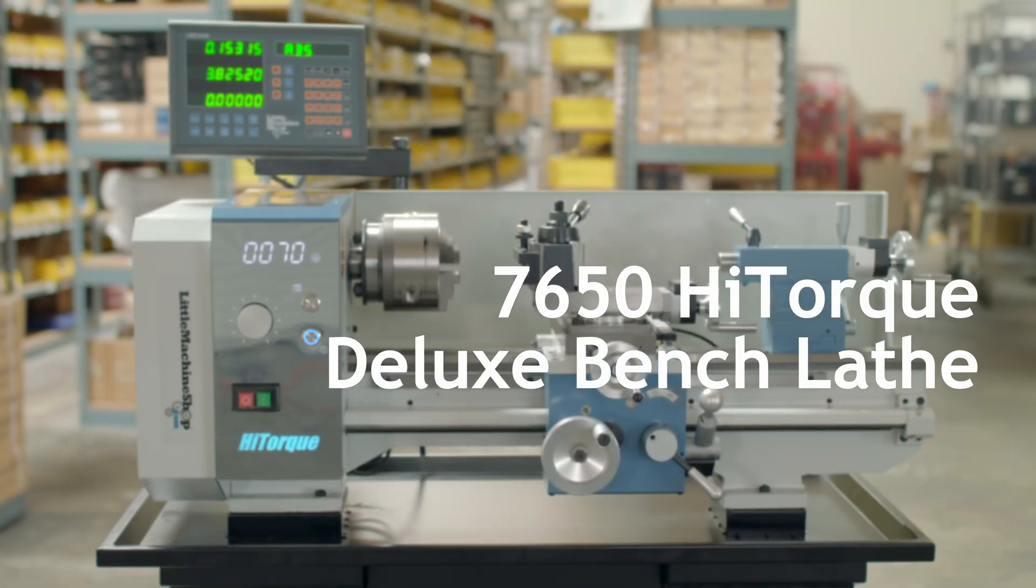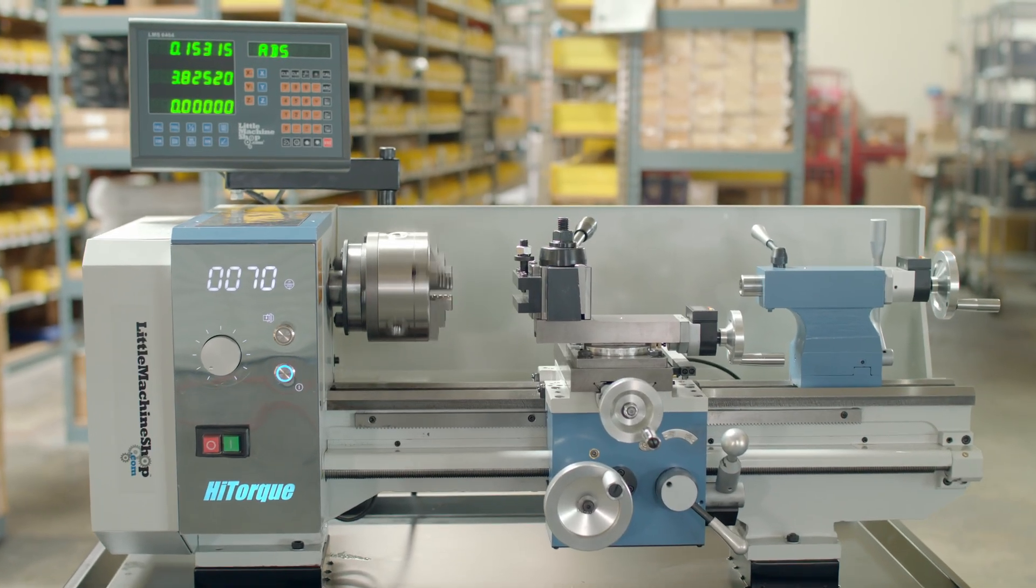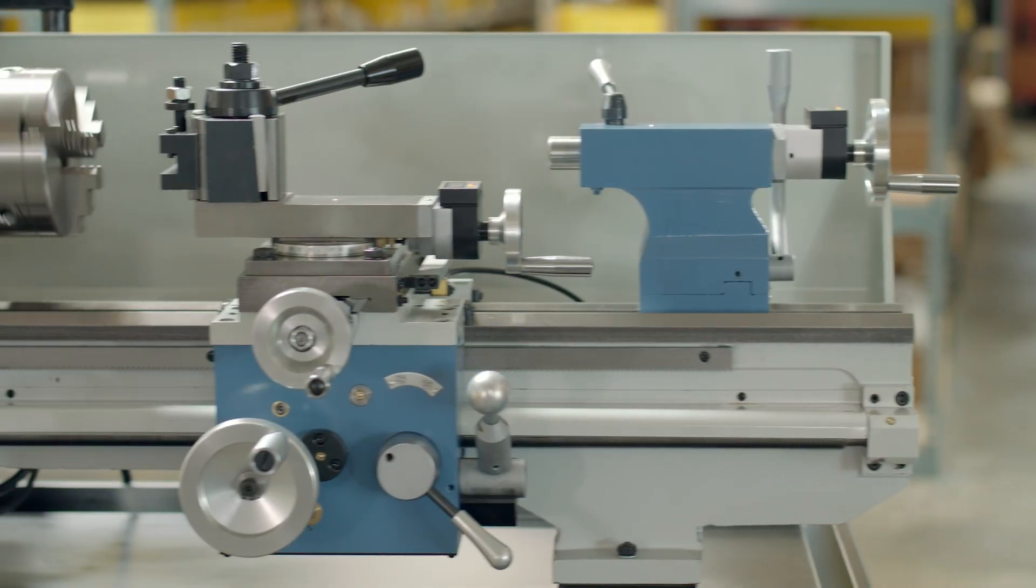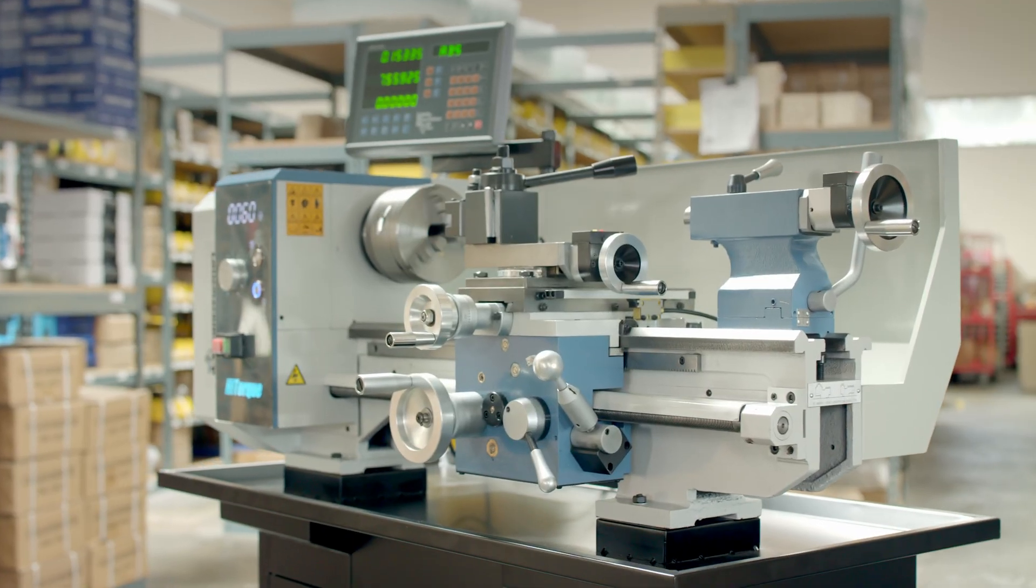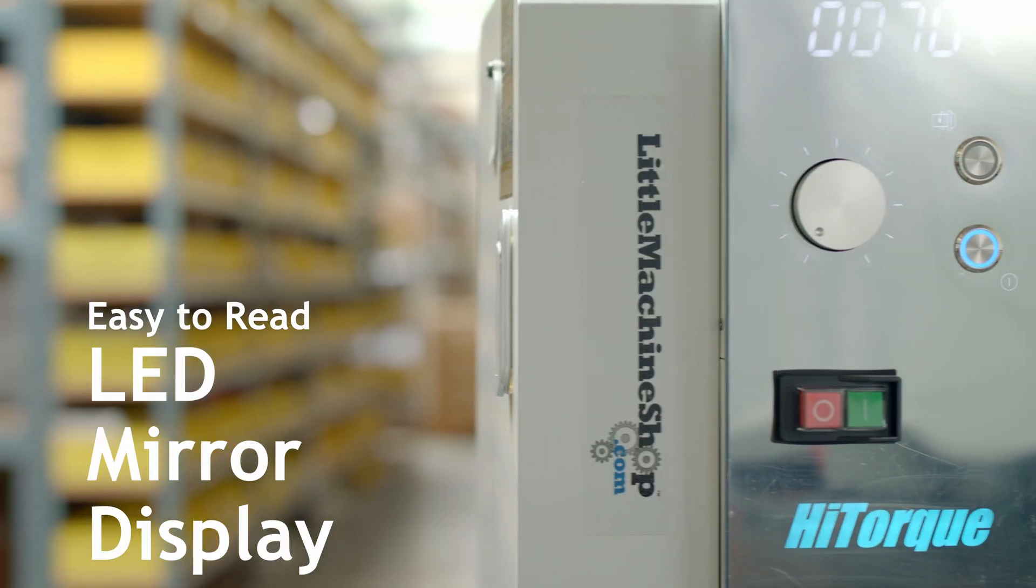The Little Machine Shop Model 7650 High Torque 9x20 Deluxe Bench Lathe is the best in its class. It is a significant step up in size, rigidity, and power compared to a mini lathe.